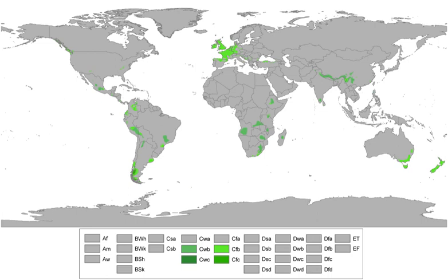Examples of this climate include parts of coastal Iceland and Norway, the Scottish Highlands, the mountains of Vancouver Island, and Haida Gwaii in Canada in the Northern Hemisphere, and extreme southern Chile and Argentina in the Southern Hemisphere — examples include Ushuaia and Punta Arenas — the Tasmanian Central Highlands, and parts of New Zealand.